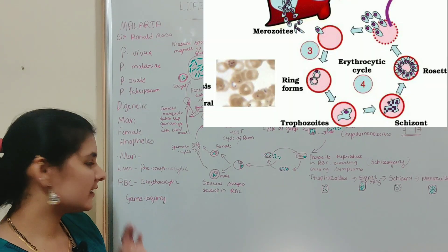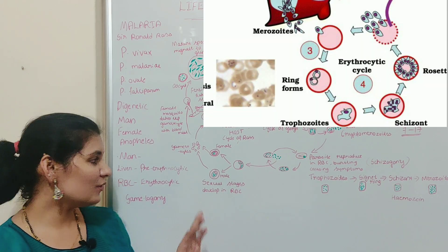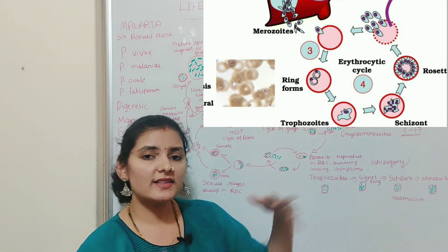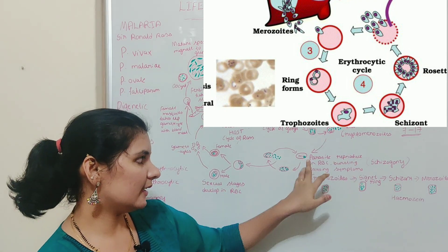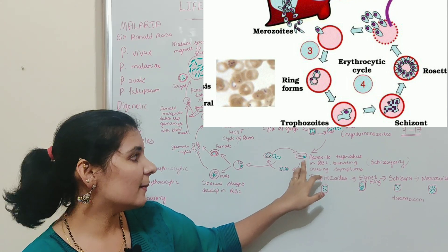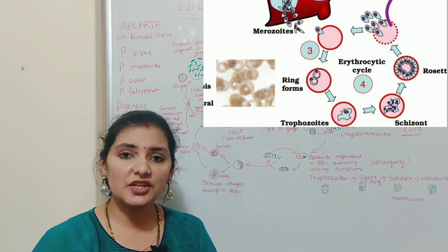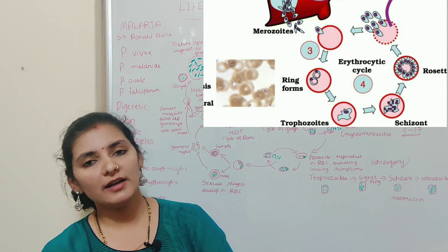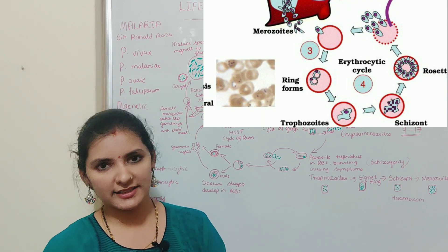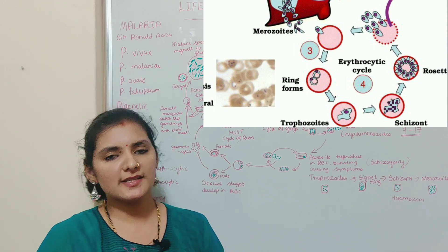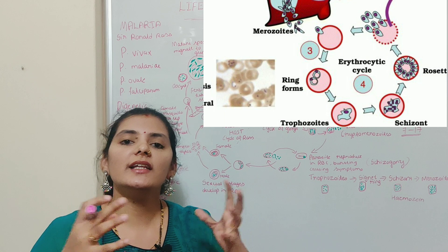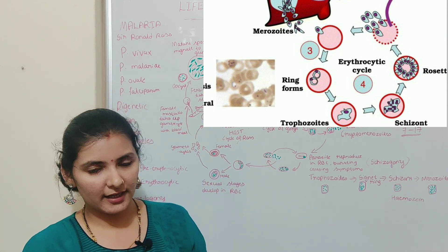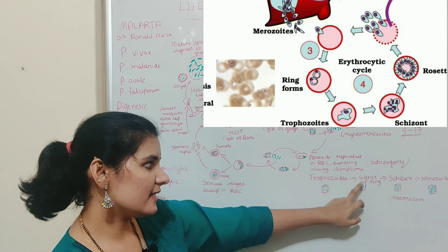The second phase is the erythrocytic cycle, which comprises the asexual phase of the parasite in RBCs. When the cryptomerozoites are released into the bloodstream they enter RBCs, during which the parasite undergoes a vegetative phase and is called a trophozoite. These trophozoites are tiny amoeba-like forms with very little cytoplasm. A small vacuole appears in the cytoplasm and increases in size, causing the cytoplasm to appear ring-like. At this stage the parasite is called a signet ring.